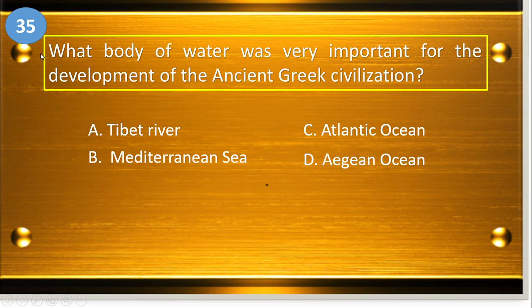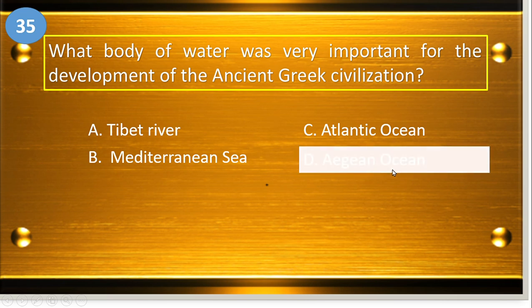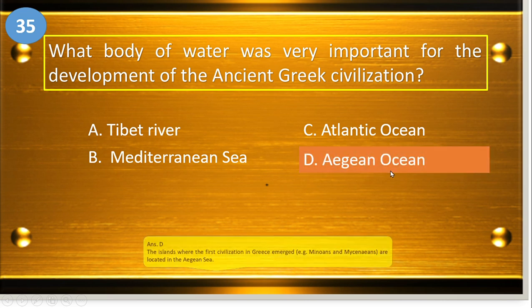Number thirty-five: what body of water was very important for the development of ancient Greek civilization? A, Tiber River; B, Mediterranean Sea; C, Atlantic Ocean; and D, Aegean Sea. The answer is Aegean Sea.